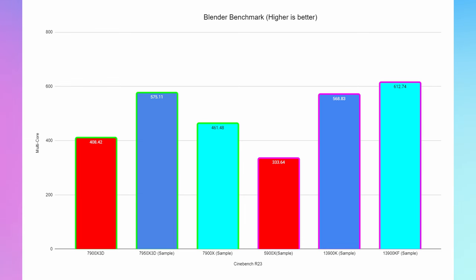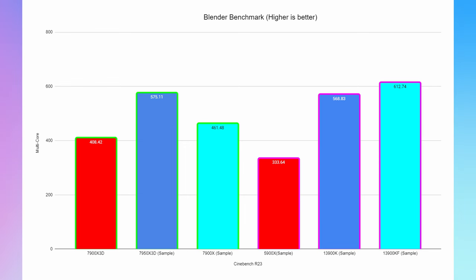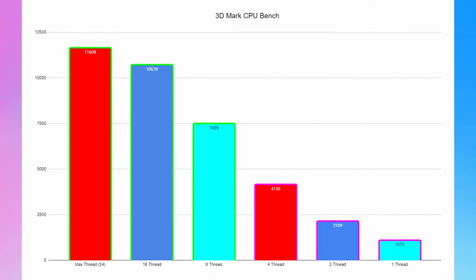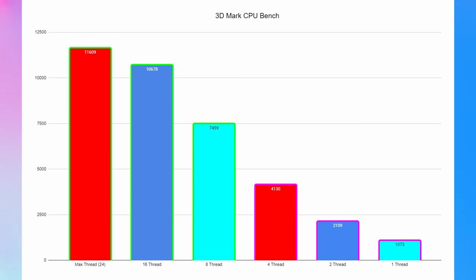In Blender Benchmark I couldn't find a 7900X 3D reference score, so I used the 7950X 3D for comparison. My score was 408.42 versus the 7950X 3D's 575. The 7900X sample was 461.48, and the 13900K and KF scored 568 and 612 respectively, still leading in multi-core. In 3DMark CPU Benchmark, the 7900X 3D hit 11,609 on all 24 threads, and 10,678 on 16 threads, with expected tapering results on lower thread counts.